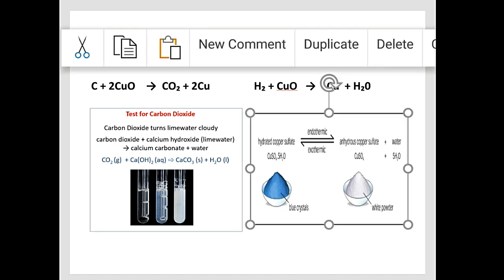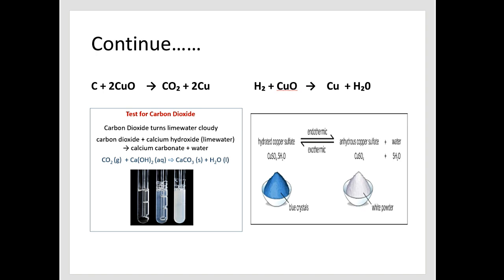Second confirmatory test: blue crystals of copper sulfate and white salt of copper sulfate. The double-headed arrow means a reversible reaction under exothermic and endothermic conditions. White copper sulfate converts to blue copper sulfate and vice versa. This reversible conversion represents the confirmatory test for water, i.e., hydrogen.